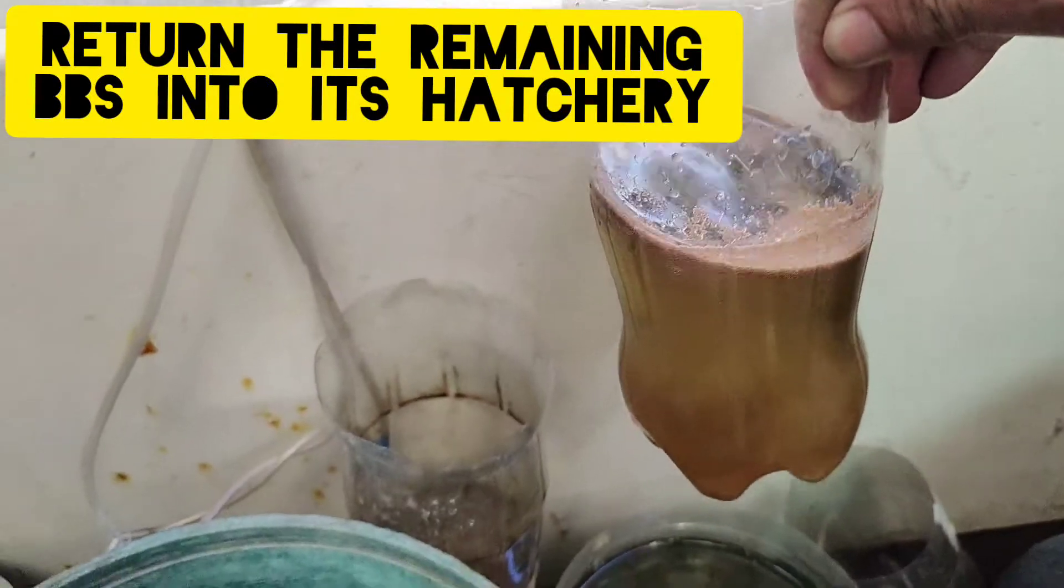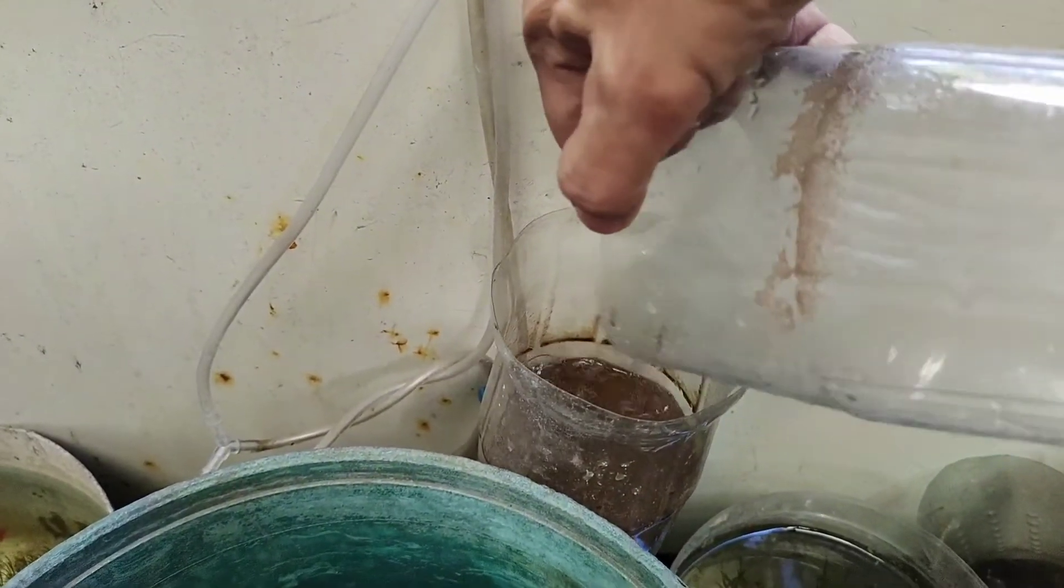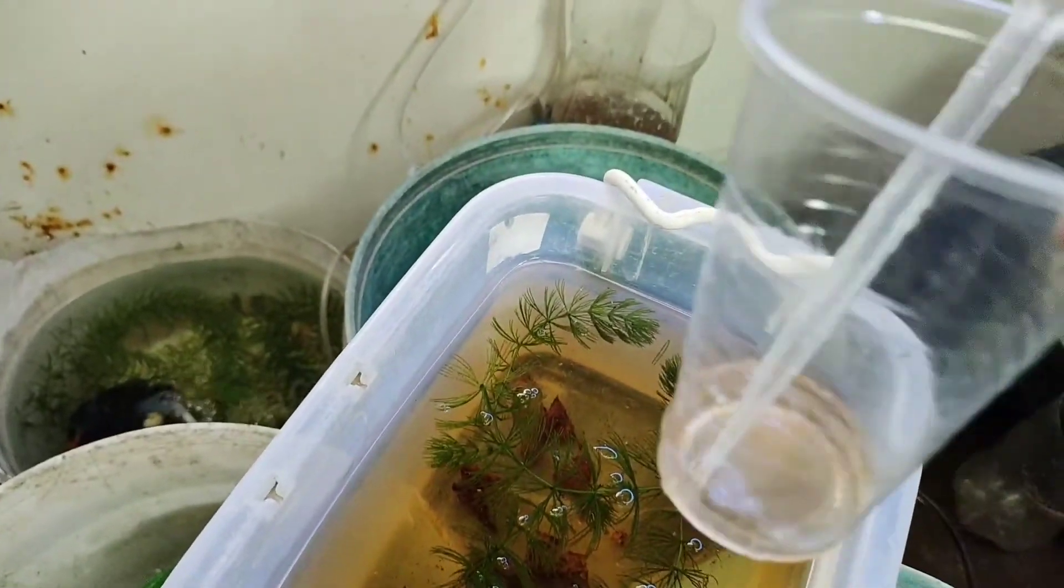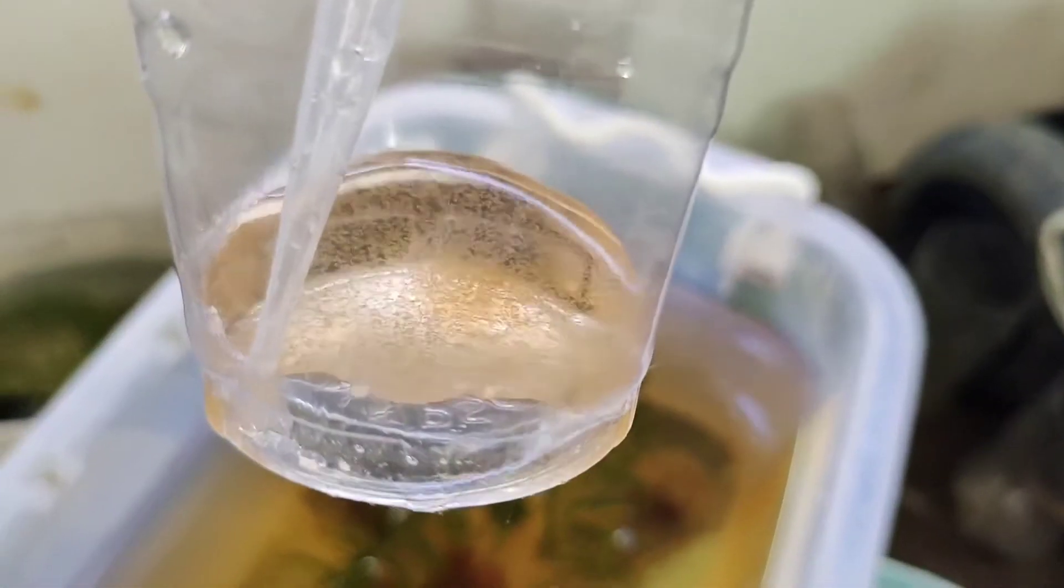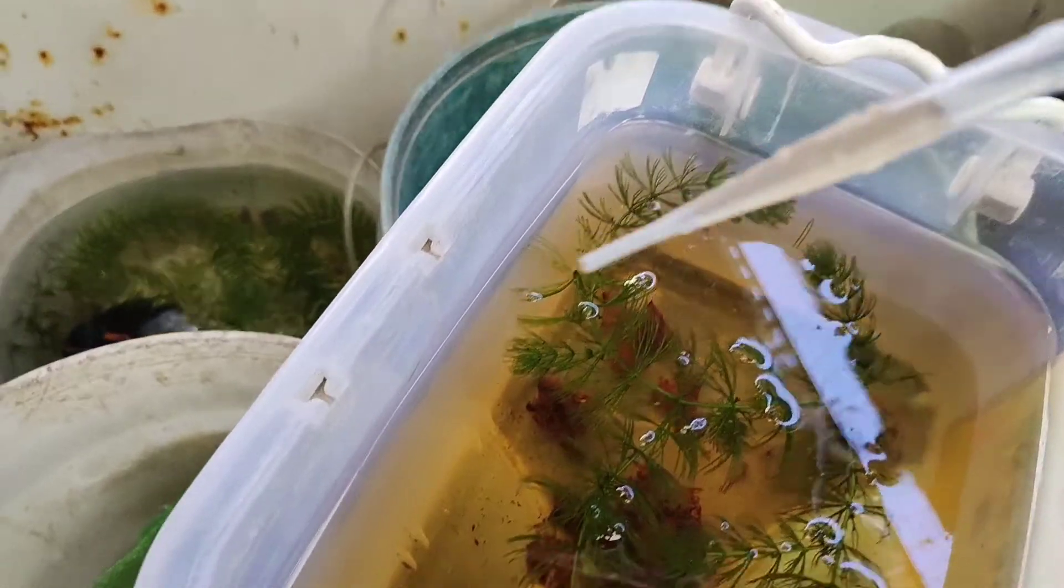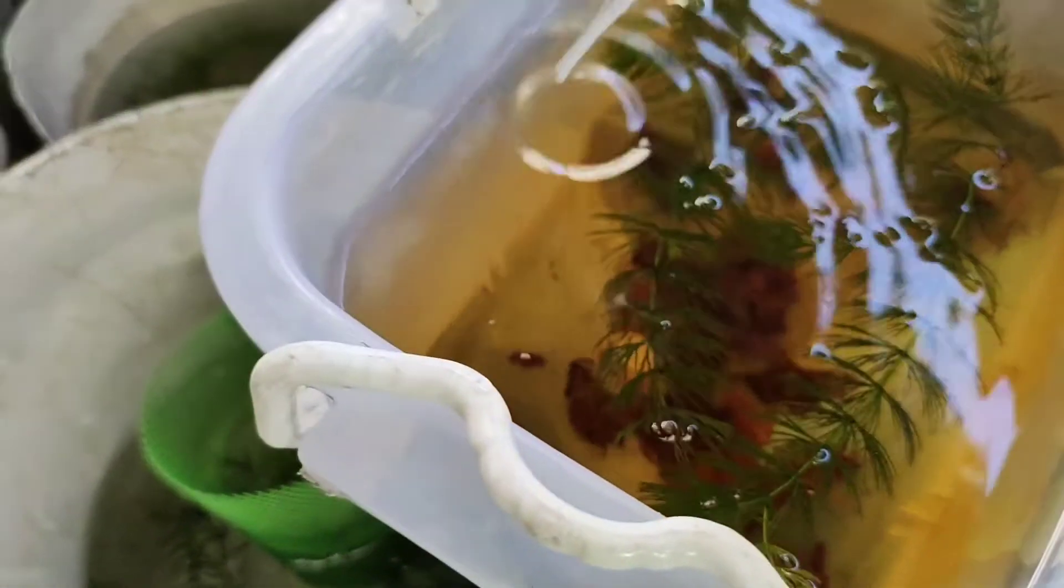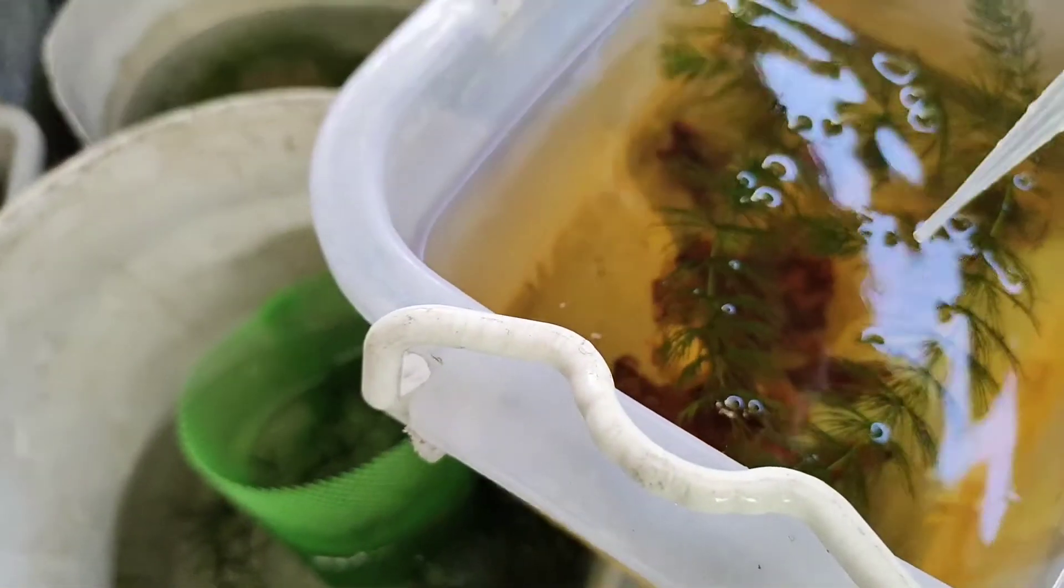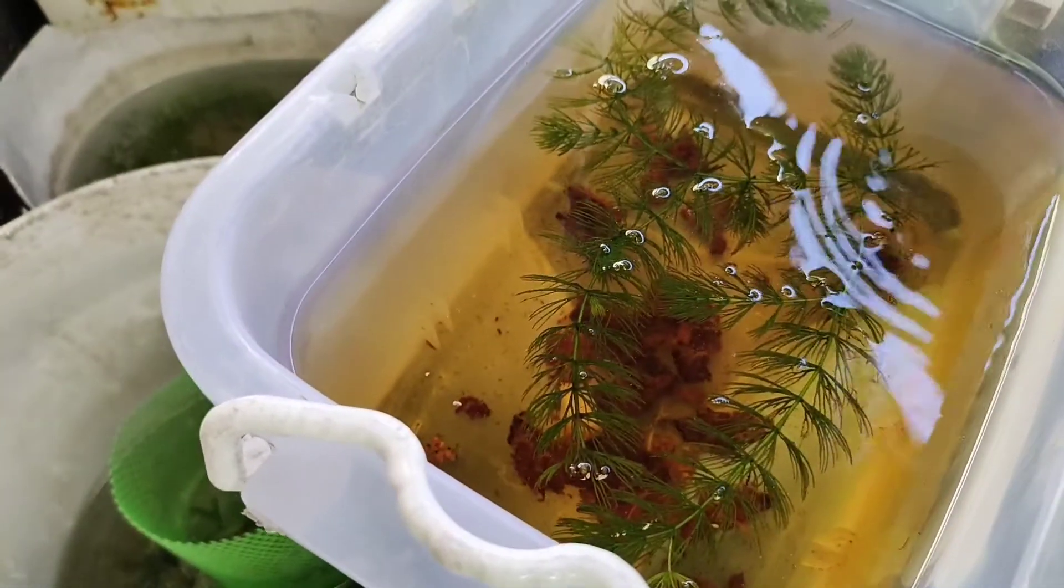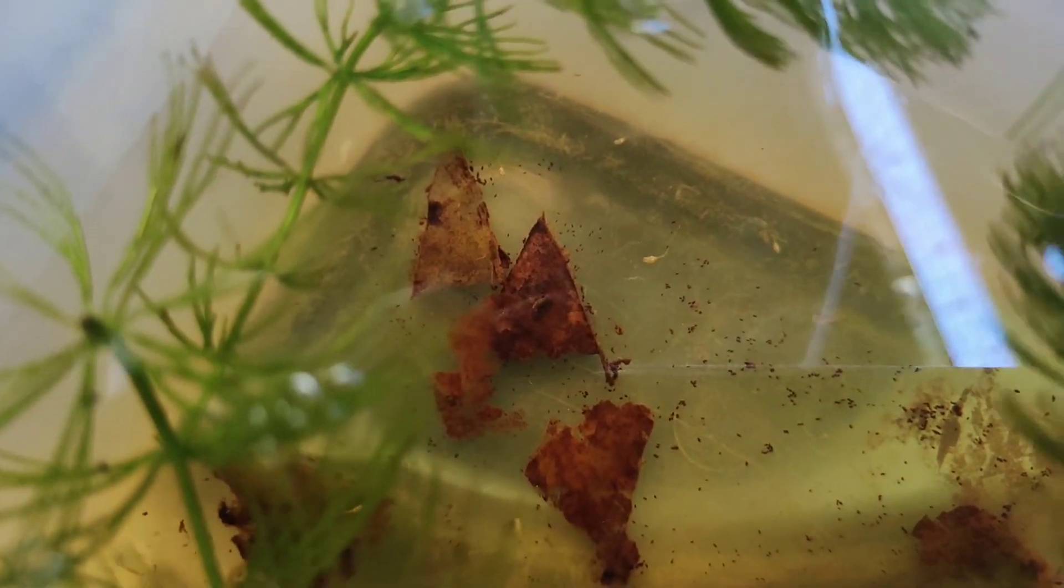We'll just need to return the hatched brine shrimp into its hatchery to feed our fry for two days. Let's start feeding this baby brine shrimp to our betta fry. Let's use this turkey baster again and just feed them a small amount twice or thrice a day. This baby brine shrimp will stay alive in the water for one to two hours, and the fry will just enjoy chasing them around.